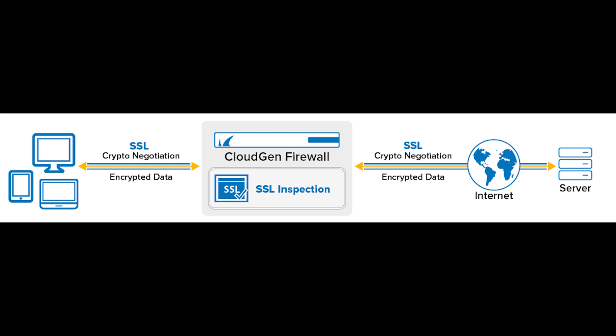Malware is increasingly using HTTPS to hide its command and control communications. SSL/TLS inspection involves performing a man-in-the-middle style interception on SSL/TLS connections entering or leaving an organization's network, enabling the organization to inspect the traffic for malicious content.